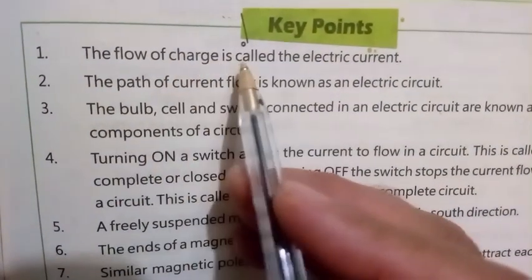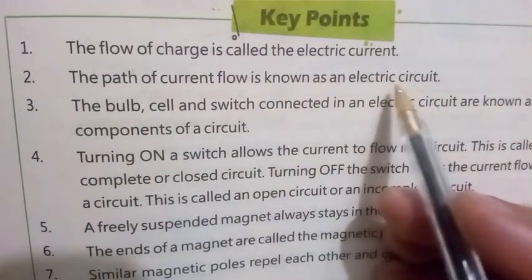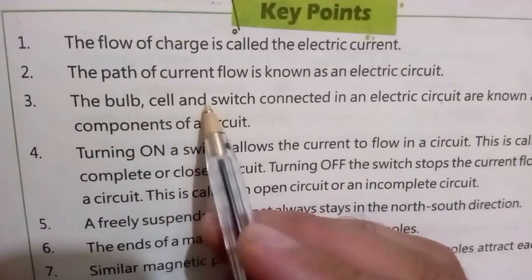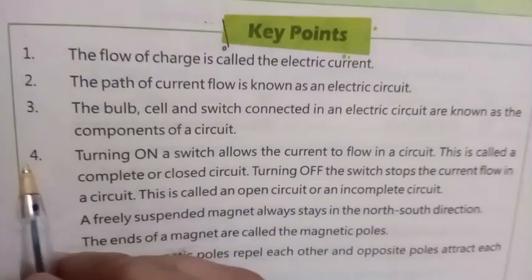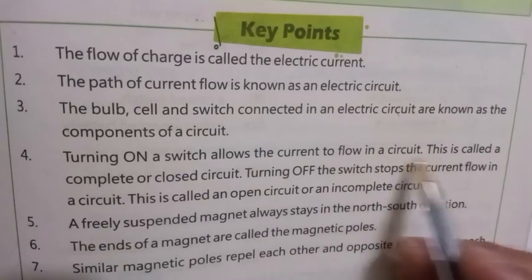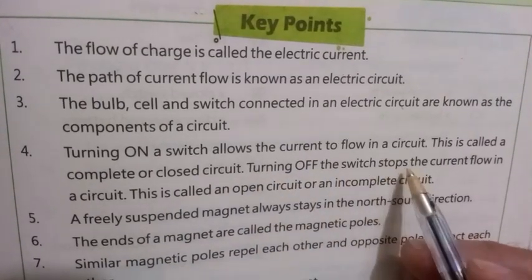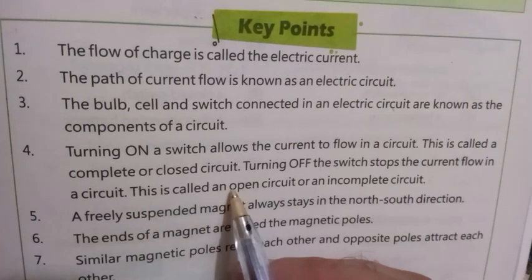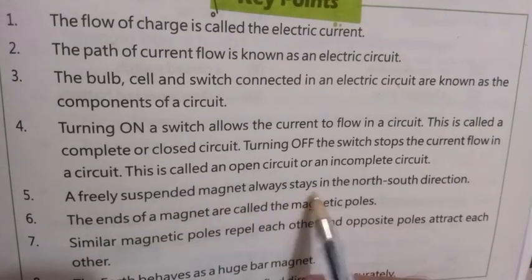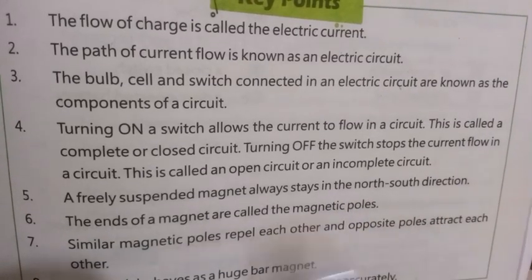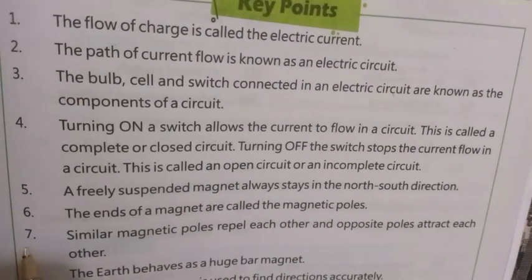Key Points: One — the flow of charge is called the electric current. Two — the path of current flow is known as an electric circuit. Three — the bulb, cell, and switch connected in an electric circuit are known as the components of a circuit. Four — turning on a switch allows current to flow; this is called a complete or closed circuit. Turning off the switch stops the current flow; this is called an open or incomplete circuit. Five — a freely suspended magnet always stays in the north-south direction. Six — the ends of a magnet are called the magnetic poles.